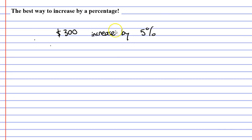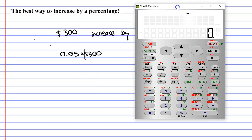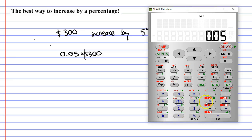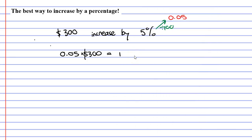How would we do this? Well, first of all, we need to convert our 5% to a decimal. And we do this when we divide it by 100. 5 divided by 100 is 0.05. So what we can do is we can take our 0.05 and multiply it by our $300. What's that going to give us?